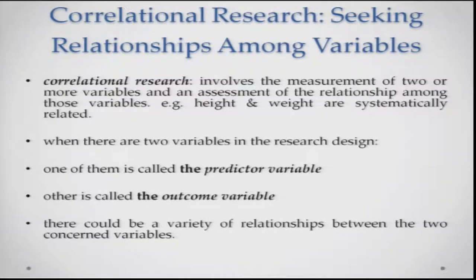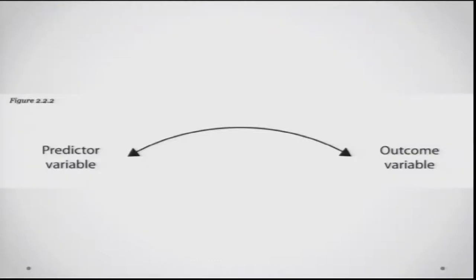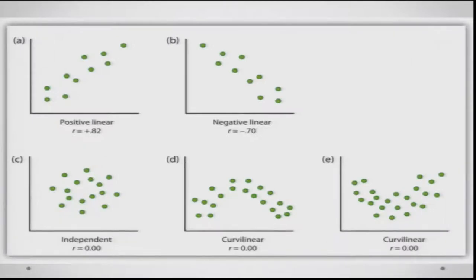Correlational research involves the measurement of two or more variables and an assessment of the relationship among them. For example, height and weight might be systematically related. One of these variables becomes the predictor variable and the other becomes the outcome variable. The relationships among variables can be depicted graphically — you could have a positive linear relationship, a negative linear relationship, variables that are independent of each other, or even a curvilinear relationship.